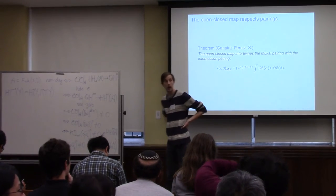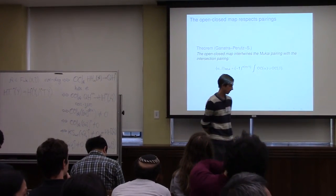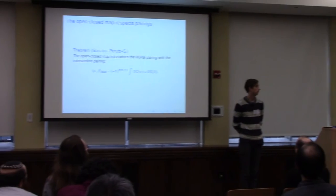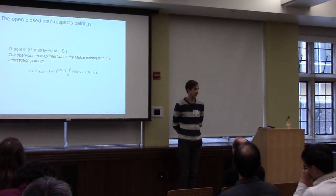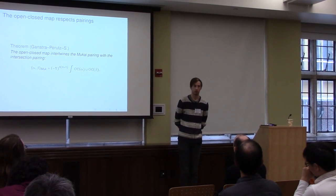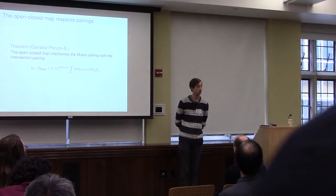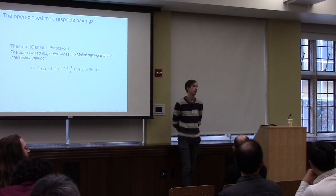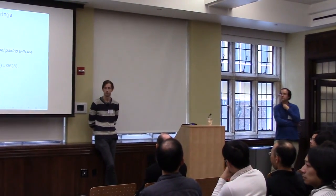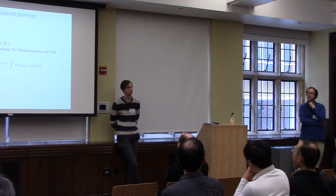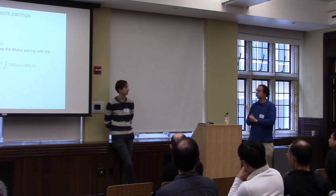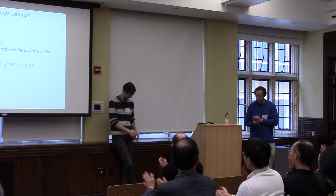Question: Are there examples of exact manifolds that fail to satisfy the non-degeneracy condition? For Weinstein manifolds, they should always be non-degenerate by results of Bourgeois, Eliashberg, and Mendelhaum. Thank you.